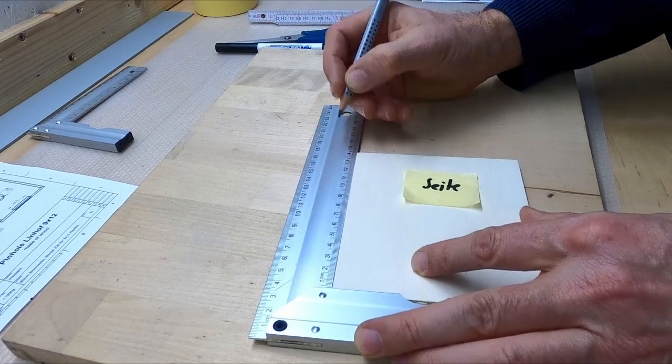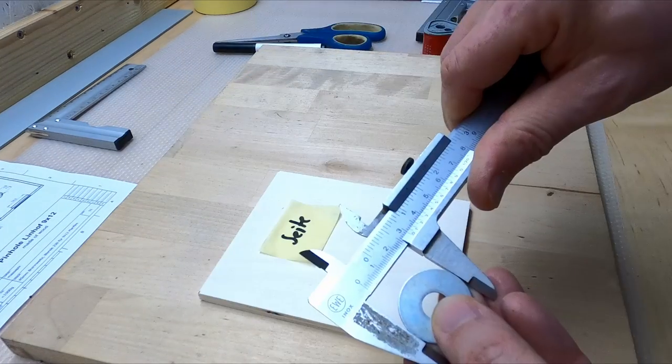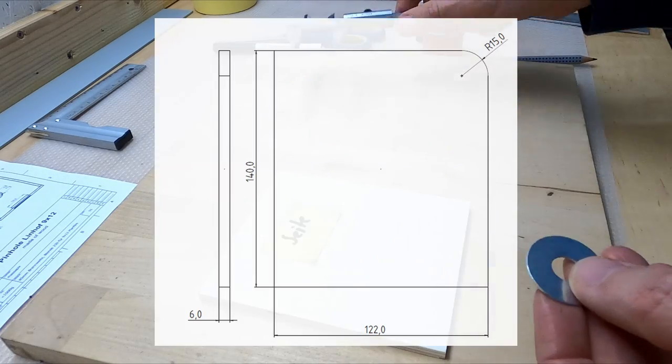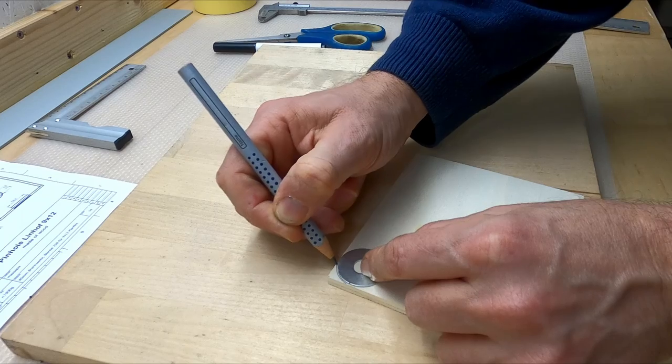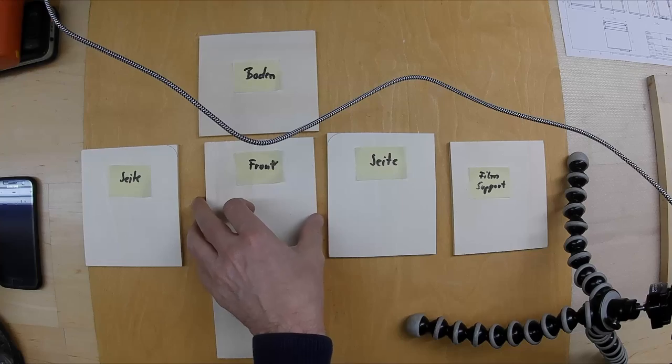Let's start with the side. Just follow the detailed drawing which we also provided on the blog, then we use this washer as a reference for the small radius on the top.